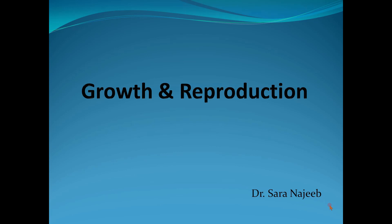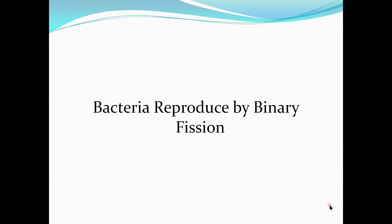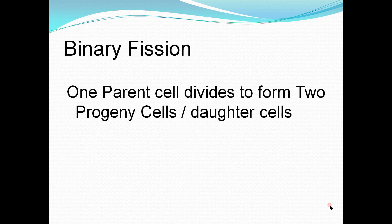Today's topic is growth and reproduction in bacteria. Most bacteria reproduce by the process of binary fission. Binary fission is basically the process in which a bacterium, which is a single cell, divides into two identical daughter cells. This process takes place when the DNA of the bacterium divides into two, and this division or replication process is known as binary fission.